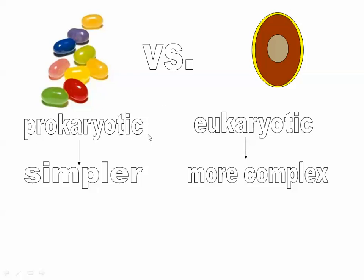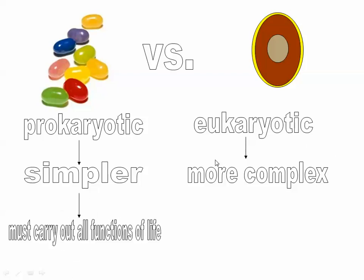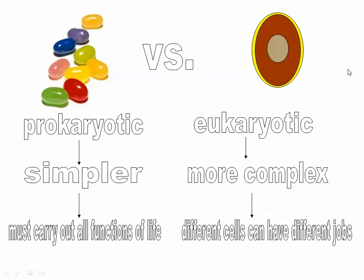In general, prokaryotic cells are simpler and eukaryotic cells are more complex. Even though they're prokaryotic, they carry out all the functions of life. Eukaryotic cells can be differentiated so that certain cells can do different types of jobs. Bacteria fit into the prokaryotic category — that's about the only thing that fits. All other types fit into eukaryotic: plant cells, animal cells, fungi, and protists like amoeba.